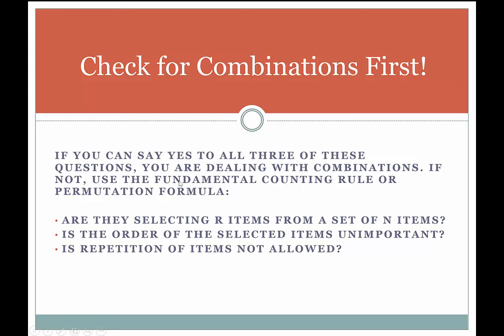If you can't confirm it's a combination, try fundamental counting rule or one of the permutation formulas. There are at least two major permutation formulas taught in elementary statistics, but I'll have you use fundamental counting rule to solve those problems. The permutation formula helps when dealing with large sets and many items, but for most problems fundamental counting rule works fine. In our context, it's combinations or fundamental counting rule — those two techniques should solve all the problems you encounter in this course.